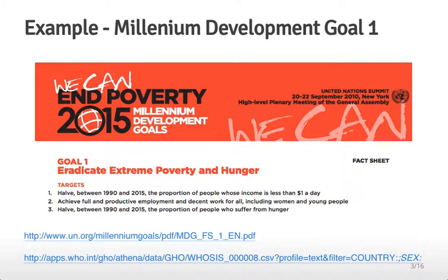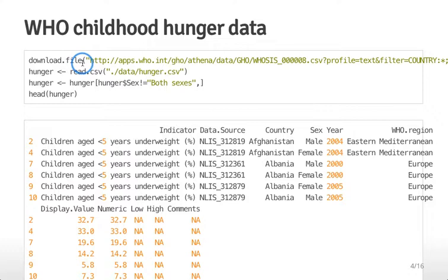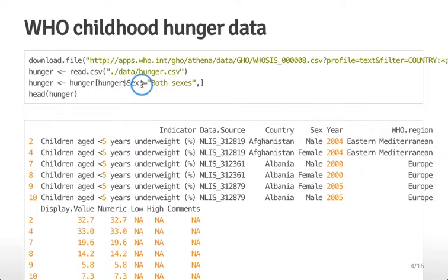The data we're going to be using focuses on Millennium Development Goal 1, which is to eradicate extreme poverty and hunger. The dataset is from the World Health Organization. I'm downloading it with download.file and reading it into a dataset called 'hunger'. There's a tidy data issue in that the dataset includes values for males, females, and a combined 'both sexes' average, so I'm going to eliminate those averaged values and just use the numbers for males and females separately.